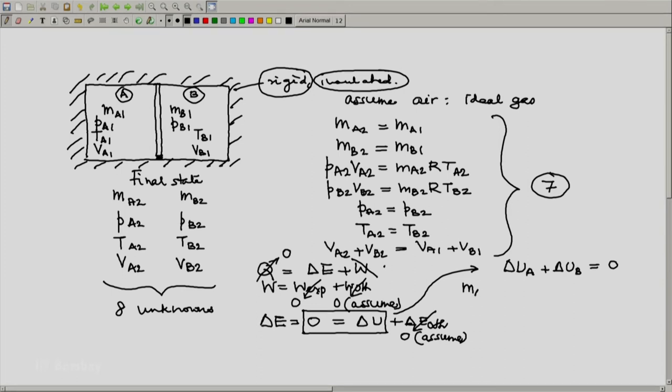In fact, the general expression would be MA CV. I am using the same CV and making a minor assumption that let us assume CV to be constant. Then delta UA will be TA2 minus TA1 plus MB CV TB2 minus TB1 is 0.